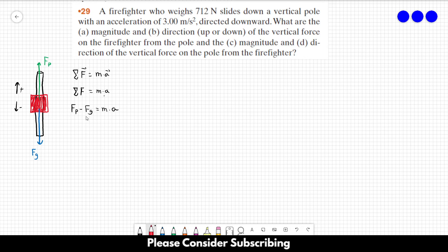So we know the force of gravity, which is this one, is the weight of the firefighter. We know the acceleration, but we don't know the mass of the firefighter. So we just have to remember that the weight is equal to mass times gravity, the acceleration of gravity. So the mass of the firefighter is equal to the weight over gravity. And this is 712 over 9.8, and this gives us roughly 72.7 kilograms.